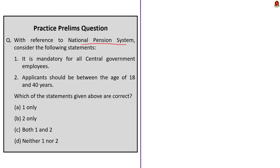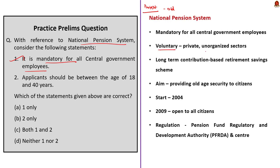The next question is about the New Pension Scheme (NPS), framed because protests have been occurring demanding a return to the old pension scheme. First statement says NPS is mandatory for all central government employees — this is correct. It is mandatory for central government employees but voluntary for others, serving as a long-term contribution-based retirement savings scheme for private and unorganized sectors. The scheme aims to provide old age security and regular income to senior citizens after retirement. It was started in 2004, initially for government employees, and opened to all citizens in 2009. Armed forces personnel are exempted and remain under the old pension scheme. It is regulated by the Pension Fund Regulatory and Development Authority (PFRDA).